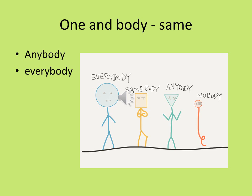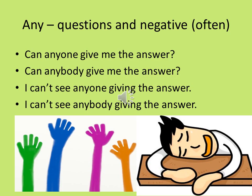Anybody and everybody. Any is often used in negative sentences and questions. For example: Can anyone give me the answer? Can anybody give me the answer? I can't see anyone giving me the answer. I can't see anybody giving me the answer.